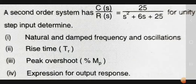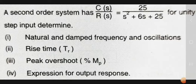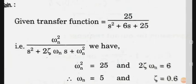First we find the natural and damped frequency and oscillations. So the solution is that first we write the given equation or given problem, that is the transfer function is equal to 25/(s² + 6s + 25). This is the first equation.